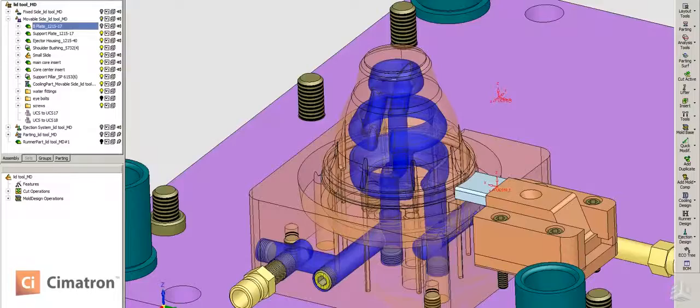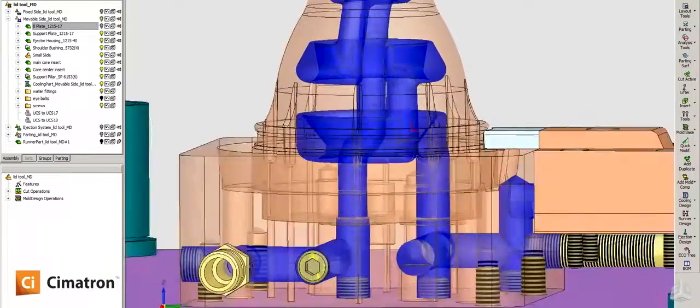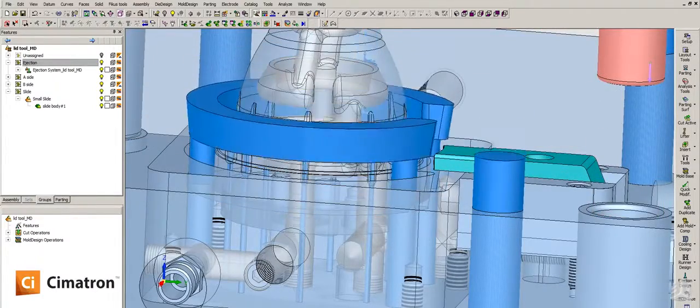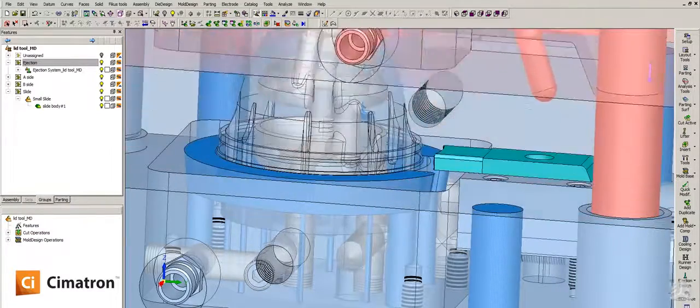As he snakes that water line through the core, he may need to change its shape, its diameter. You may need to check to see if it's going to possibly come close to an ejector pin. All the while, he can be doing that and checking to make sure that it's within a minimum condition of material.